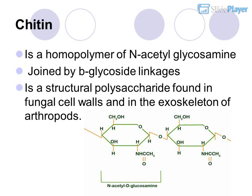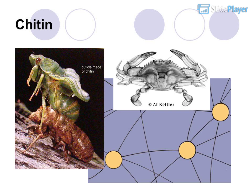Chitin is a homopolymer of N-acetyl glucosamine, joined by beta glycoside linkages. It is a structural polysaccharide found in fungal cell walls and in the exoskeleton of arthropods.